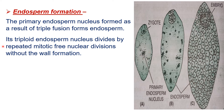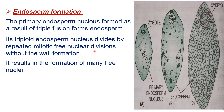The triploid endosperm nucleus divides by repeated mitotic free nuclear divisions without wall formation — this condition causes the nucellus to be destroyed. In the endosperm, mitotic division occurs where first karyokinesis takes place, then cytokinesis; but here only karyokinesis occurs. This results in the formation of many free nuclei.